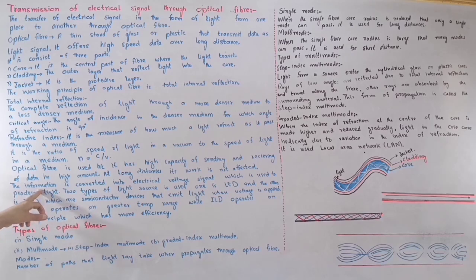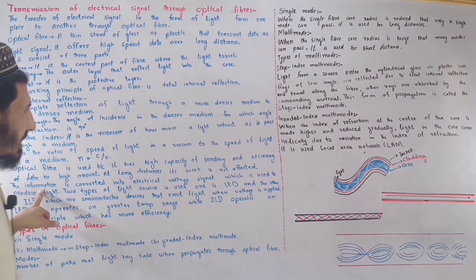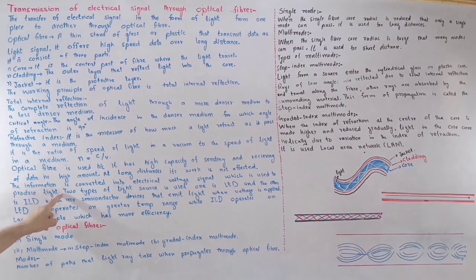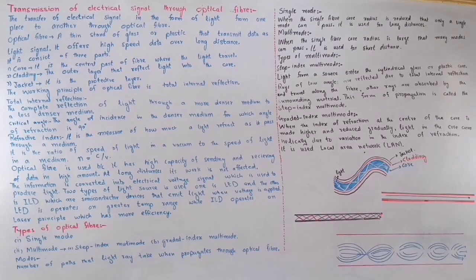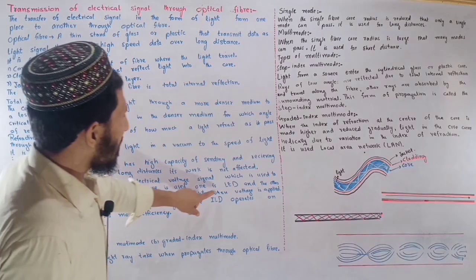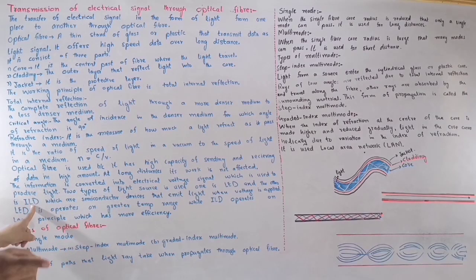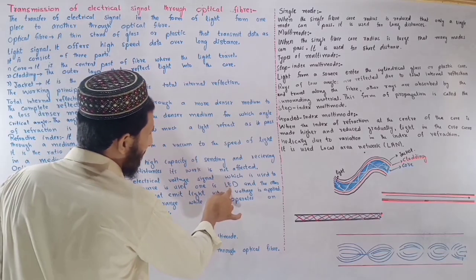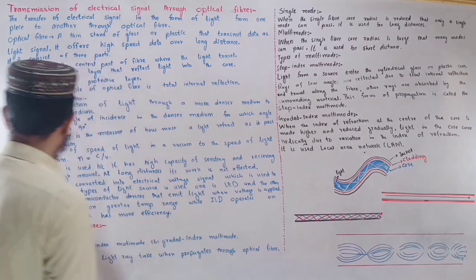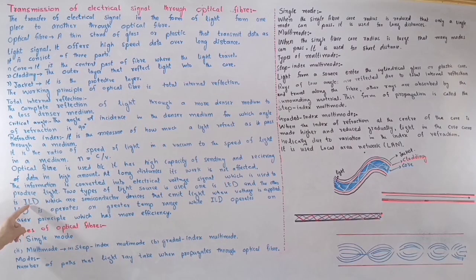The information is converted into an electrical signal, which is used to produce light. Two types of light sources are used: one is LED — light emitting diode — and the other is ILD — injection laser diode.